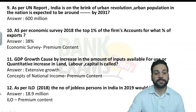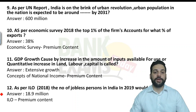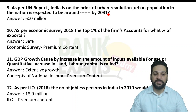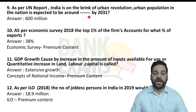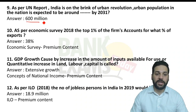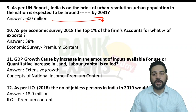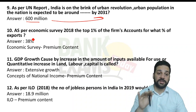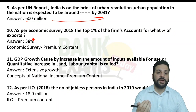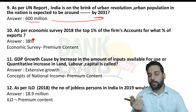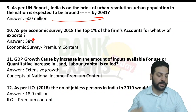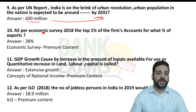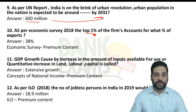As per the UN report, India is on the brink of an urban revolution, with urban population expected to be around 600 million by 2031. We covered the report, but we didn't cover the specific figure for India's expected population by 2031 — so that question was not covered. As per Economic Survey 2018, the top 1% of firms accounts for 38% of exports — covered in our economic survey premium content notes.